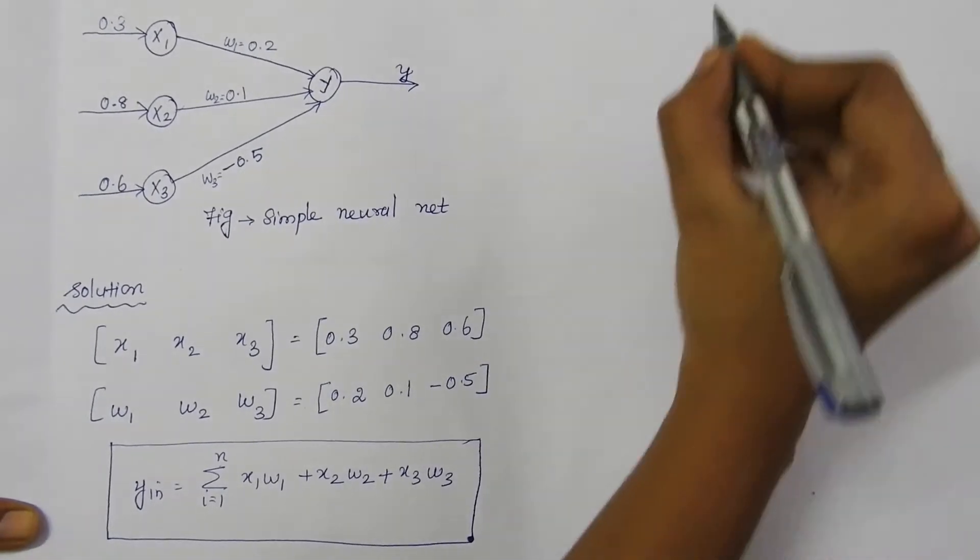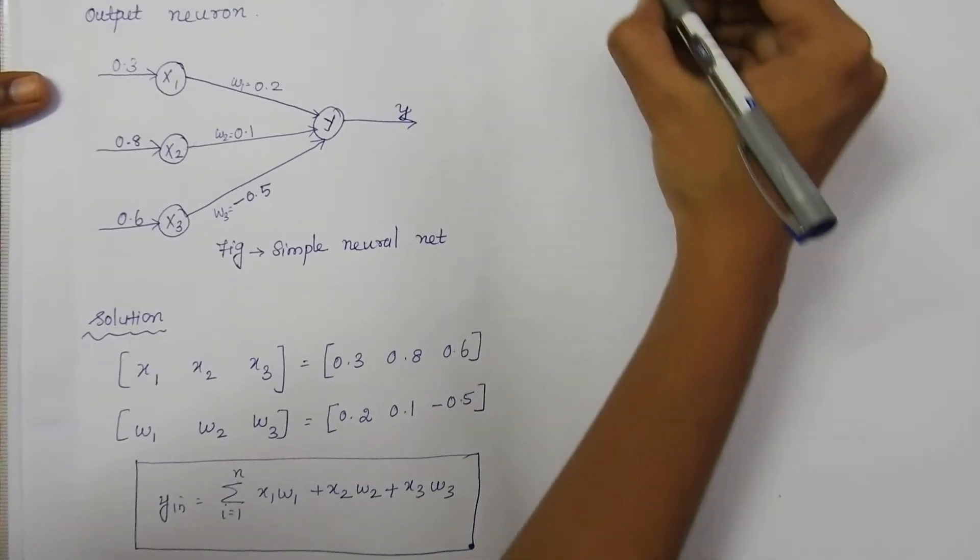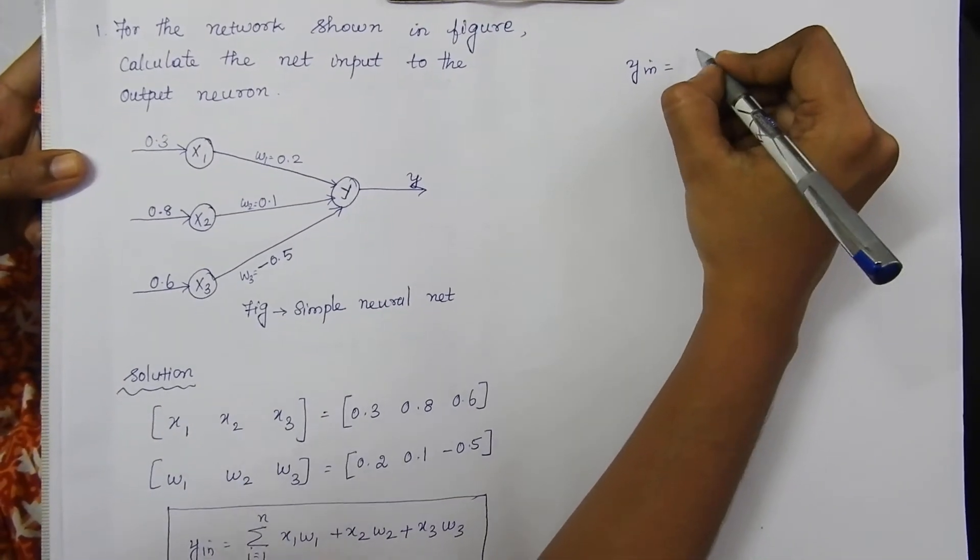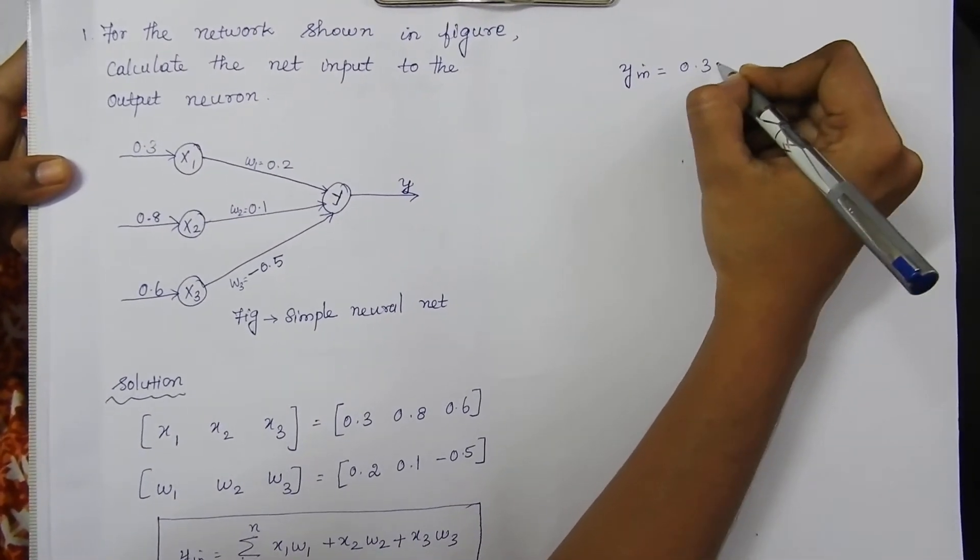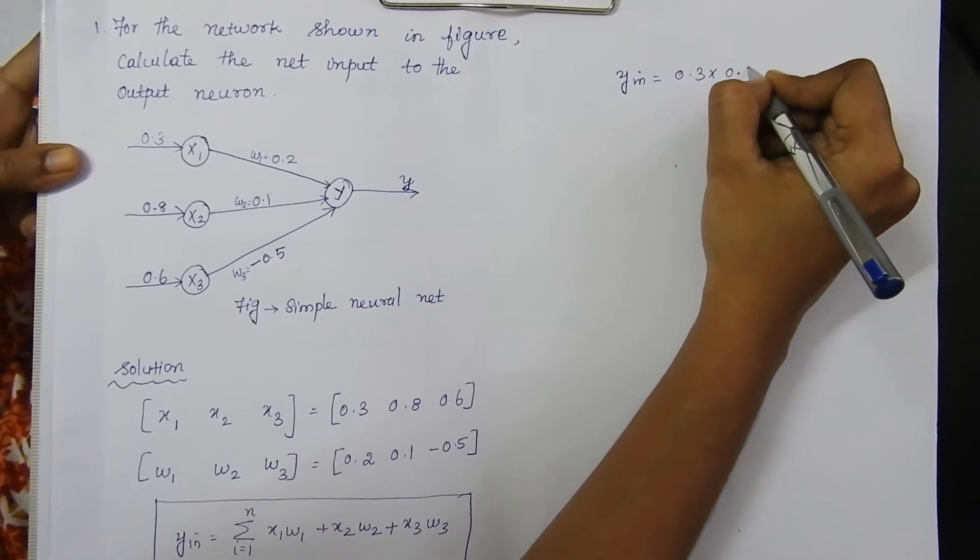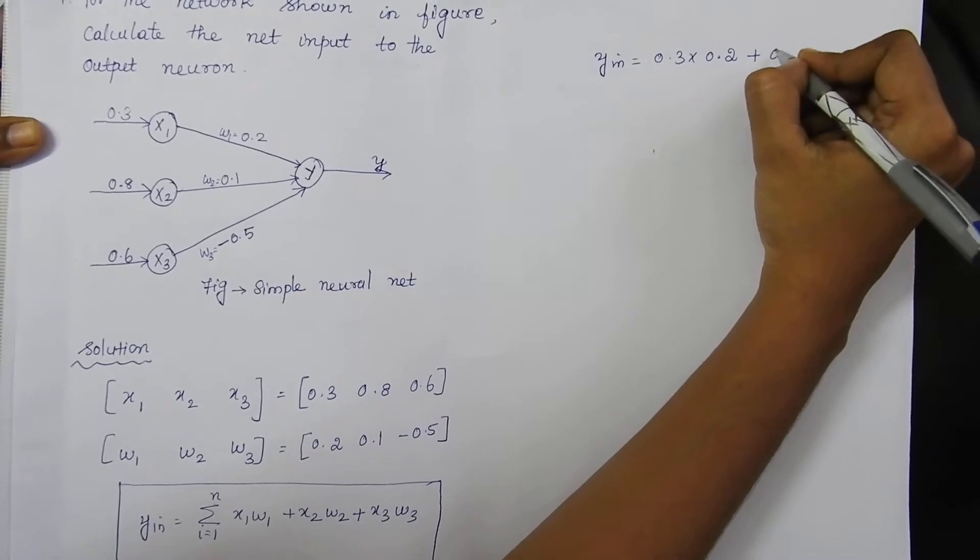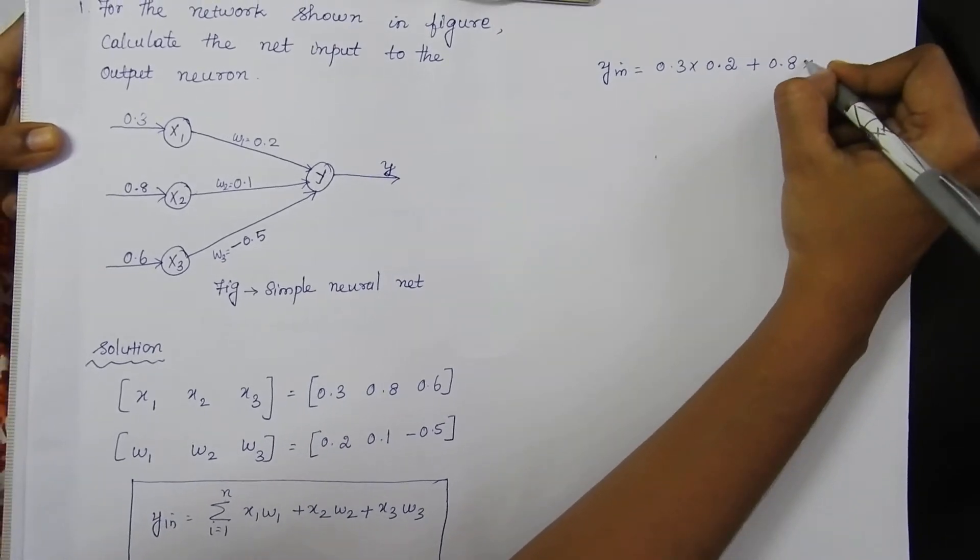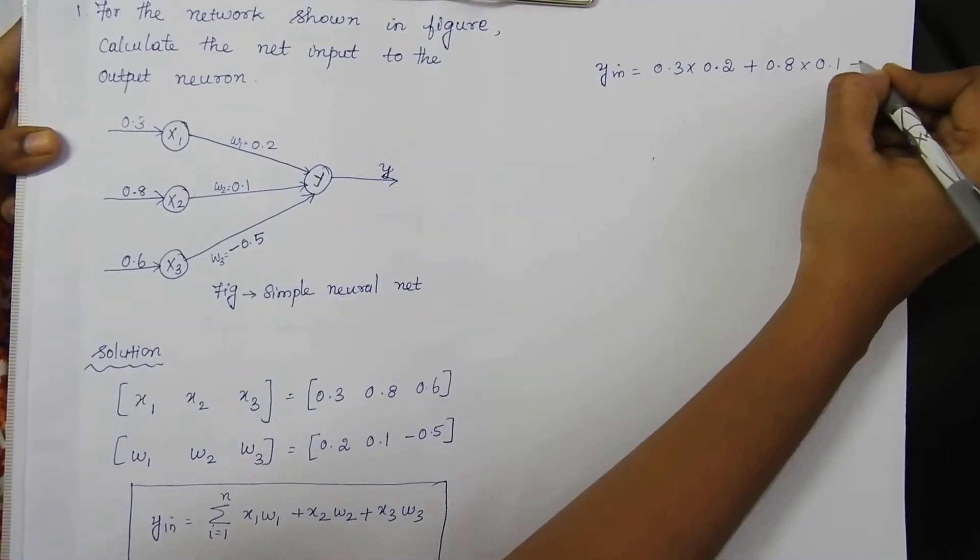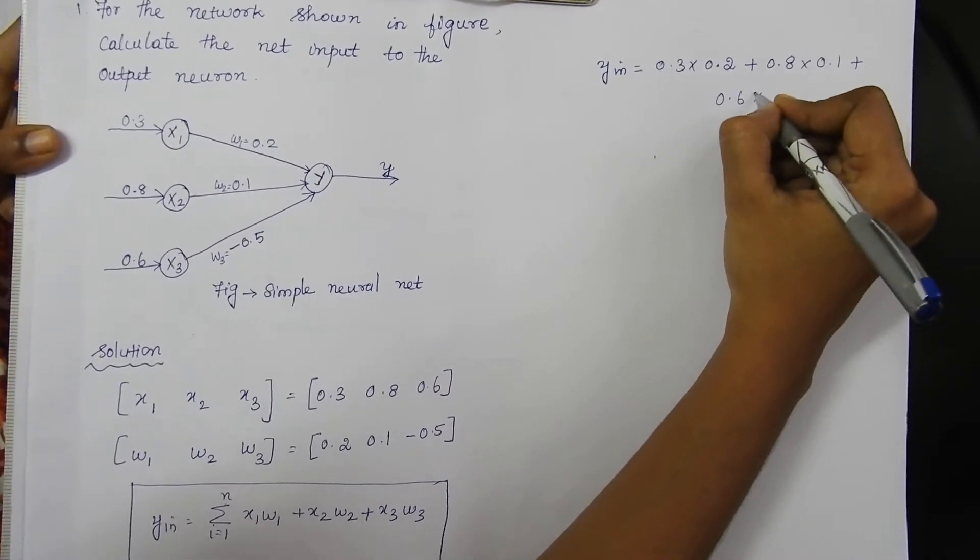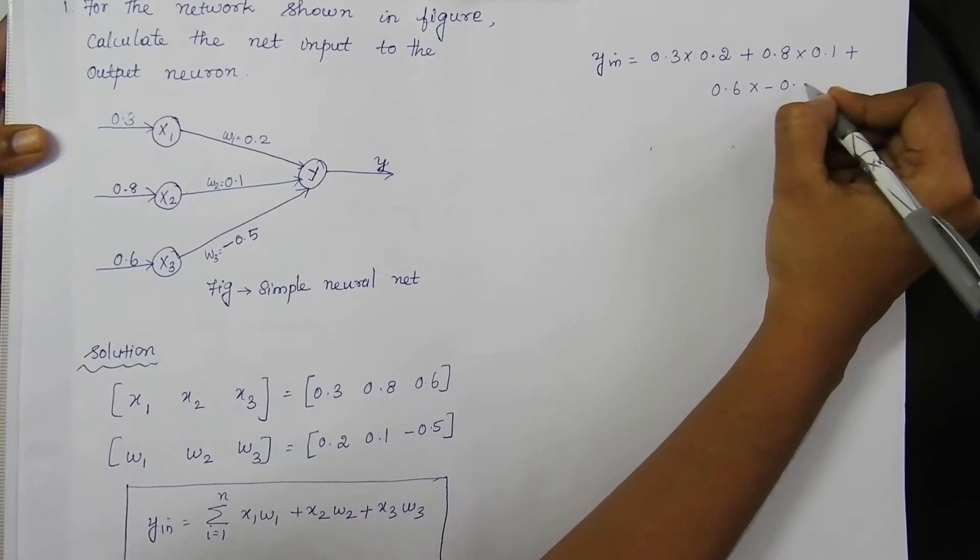Substitute the values into the equation: y_in equal to x1 value 0.3 into w1 0.2 plus x2 value 0.8 and w2 value 0.1 plus x3 value 0.6 and w3 value minus 0.5.